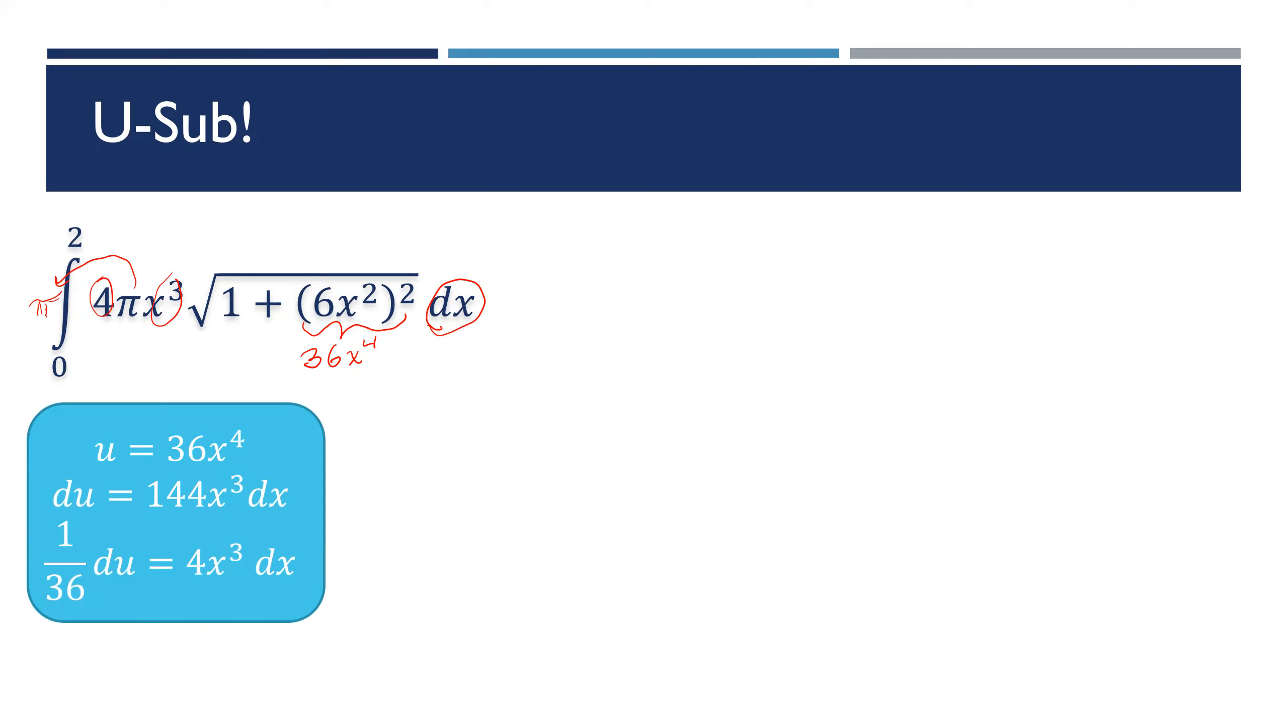What I also want to do is change the limit of integration so everything is in terms of u. I think it's going to be easier in this case. So when x is 0, u is 0. When x is 2, 2⁴ times 36 would be 576.